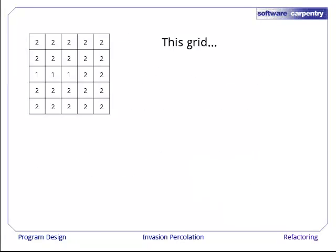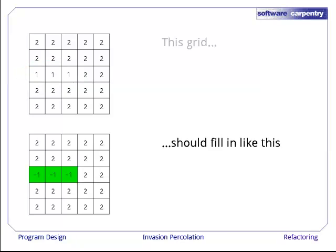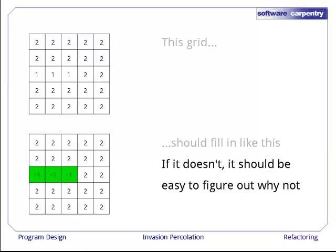Here's one. This grid has the value 2 everywhere, except in three cells that we have filled with ones. If our program is working correctly, it should fill exactly those three cells, and nothing else. If it doesn't, it should be pretty easy for us to figure out what's gone wrong.